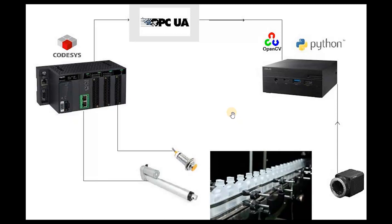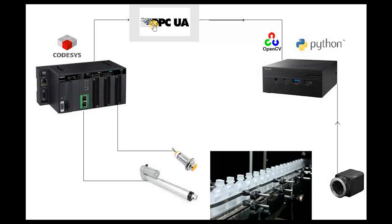Now let's say that you want to implement this project on site. What are the requirements? You're going to need a PLC of course — it doesn't matter what brand. What's important is that it can run some sort of communication protocol, because we have a mini PC that we want to communicate with, and all the algorithms for image processing will be held inside this mini PC. You can use OPC UA, Modbus TCP, or any protocol you want using Python to communicate with your PLC.